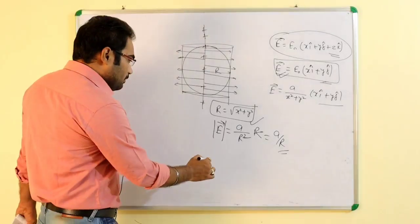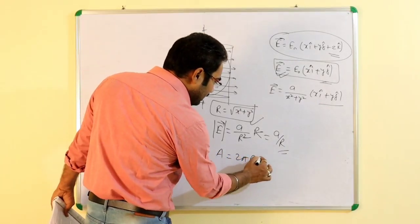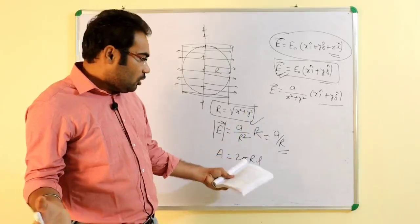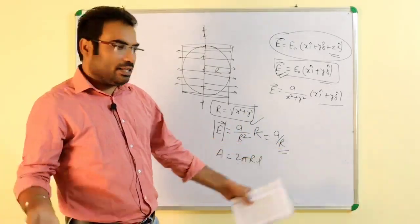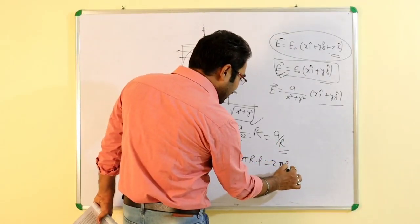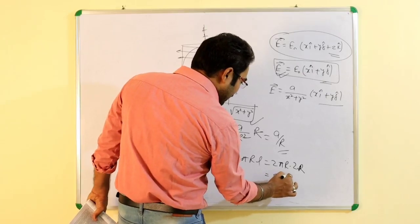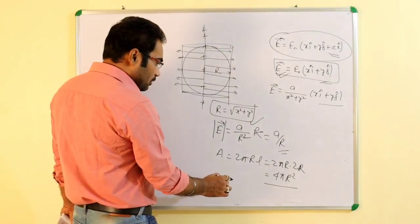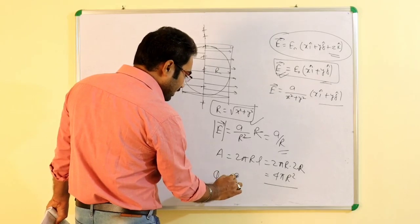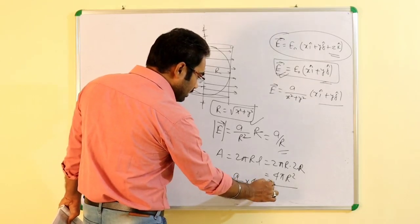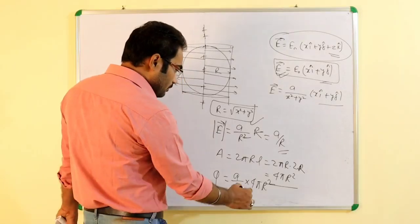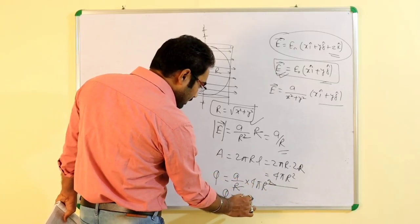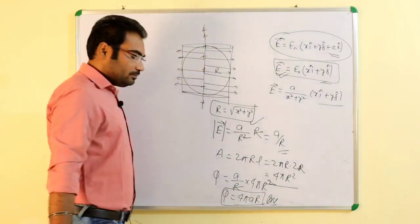Cylinder का curved surface area = 2πrL। इस cylinder की length sphere के diameter के बराबर होगी यानी L = 2R। तो area = 2πr × 2R = 4πrR। अब flux = E × area = (A/r) × 4πrR = 4πAR। r cancel हो जाता है। तो flux का final answer है 4πAR। This is the final answer. Thank you.